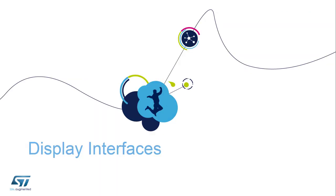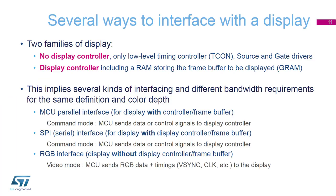Let's now see the available display interfaces. There are basically two families of display: displays with no display controller — only a low-level timing controller, or TCON, and source and gate drivers — and displays with a display controller including a RAM, so a GRAM, storing the frame buffer to be displayed. This implies several kinds of interfacing and different bandwidth requirements for the same definition and color depth.